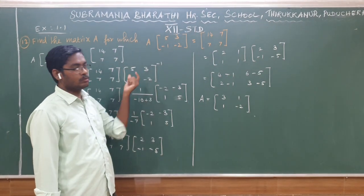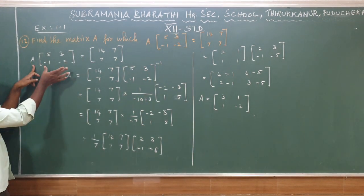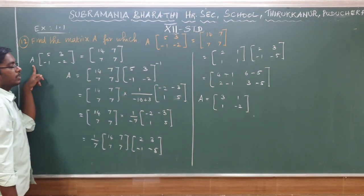Now, we need to find A. So, the given question is A times the matrix [5, 3; -1, -2], that is equal to [14, 7; 7, 7].